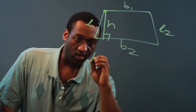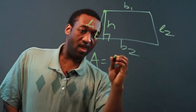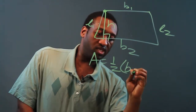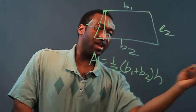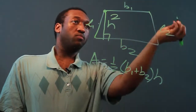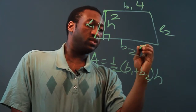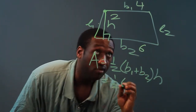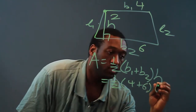To find the area of a trapezoid, we will have one-half the sum of the bases — base one plus base two — times the height. So let's say we had a height of two, base one is four, and base two is six. We would get one-half, four plus six, times two.